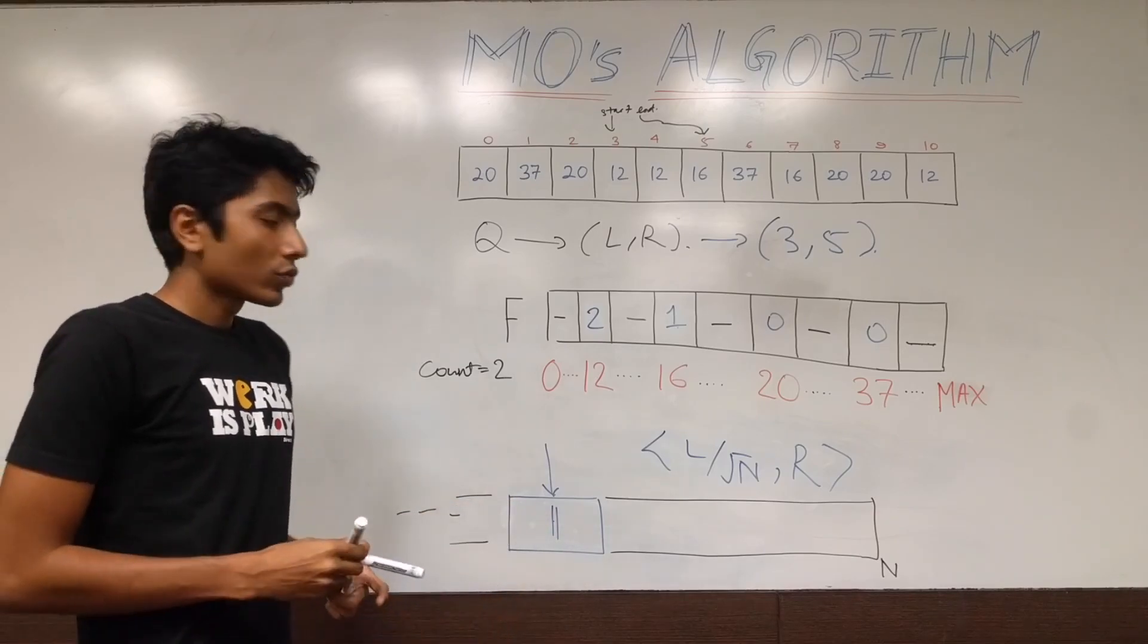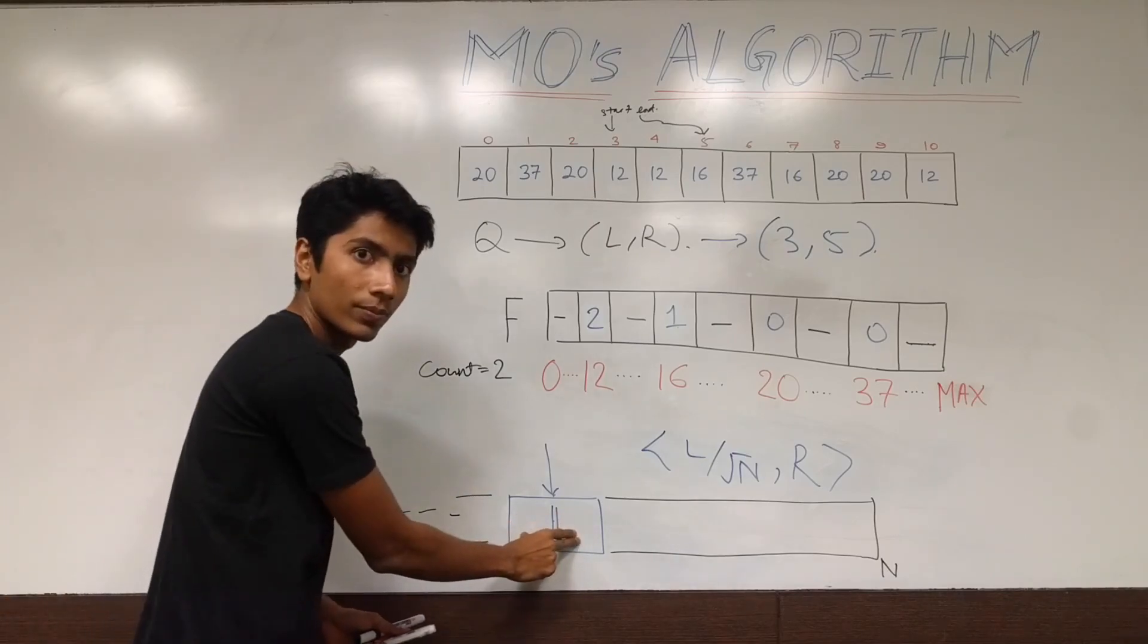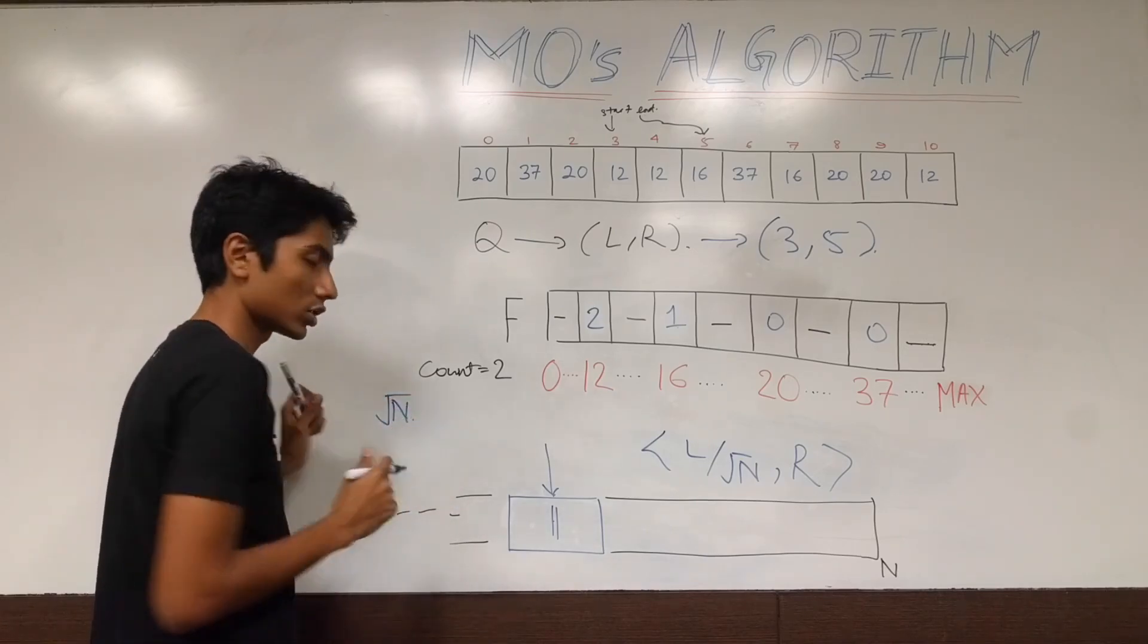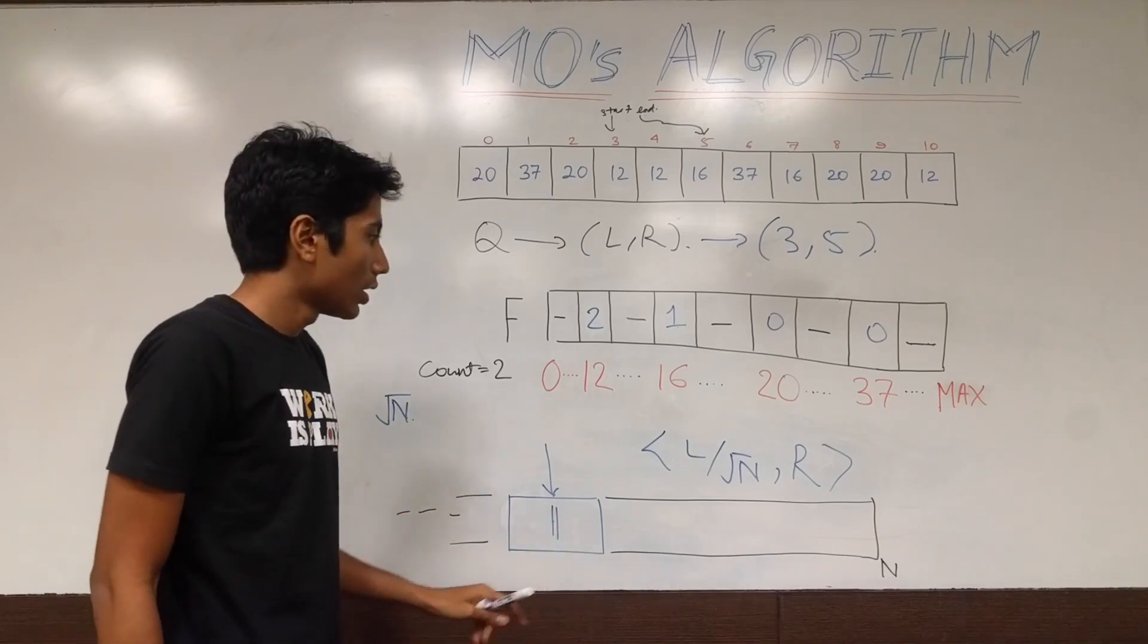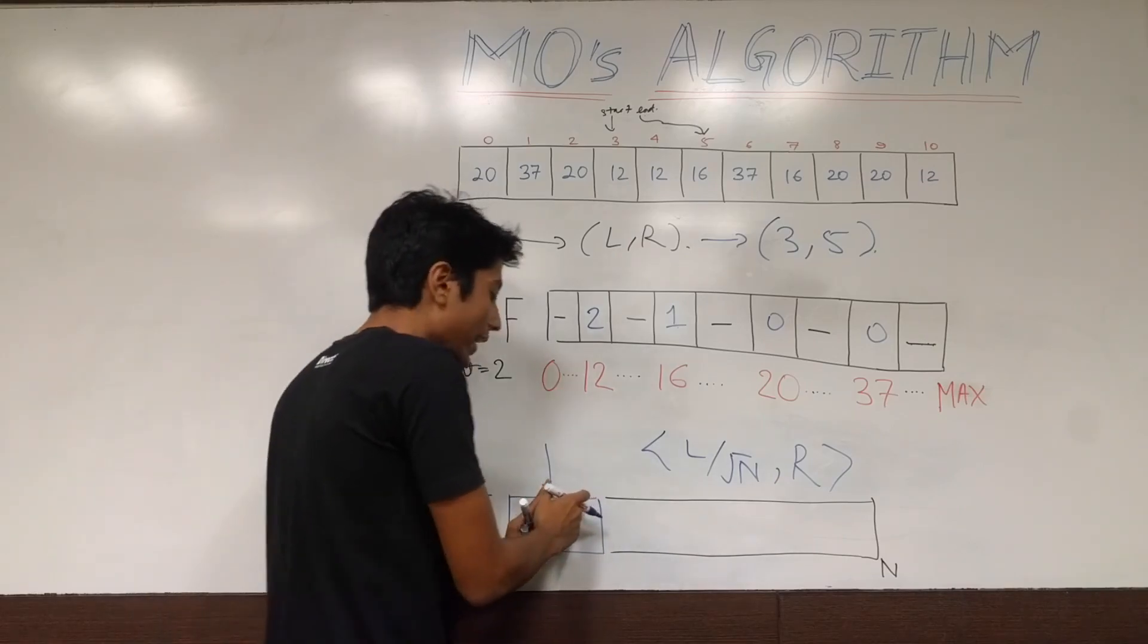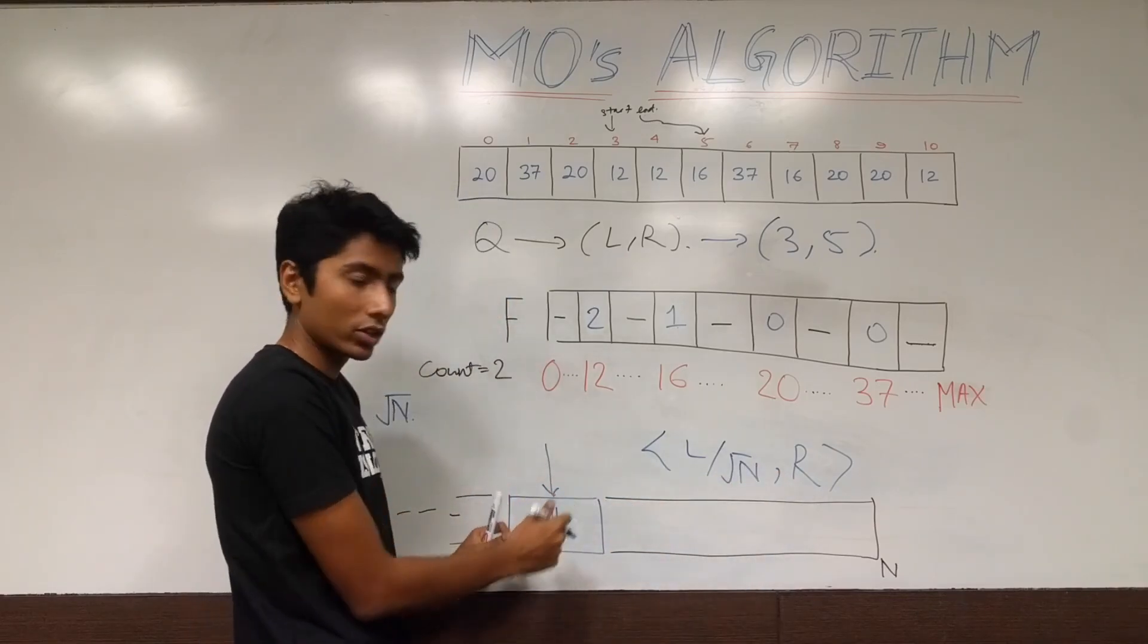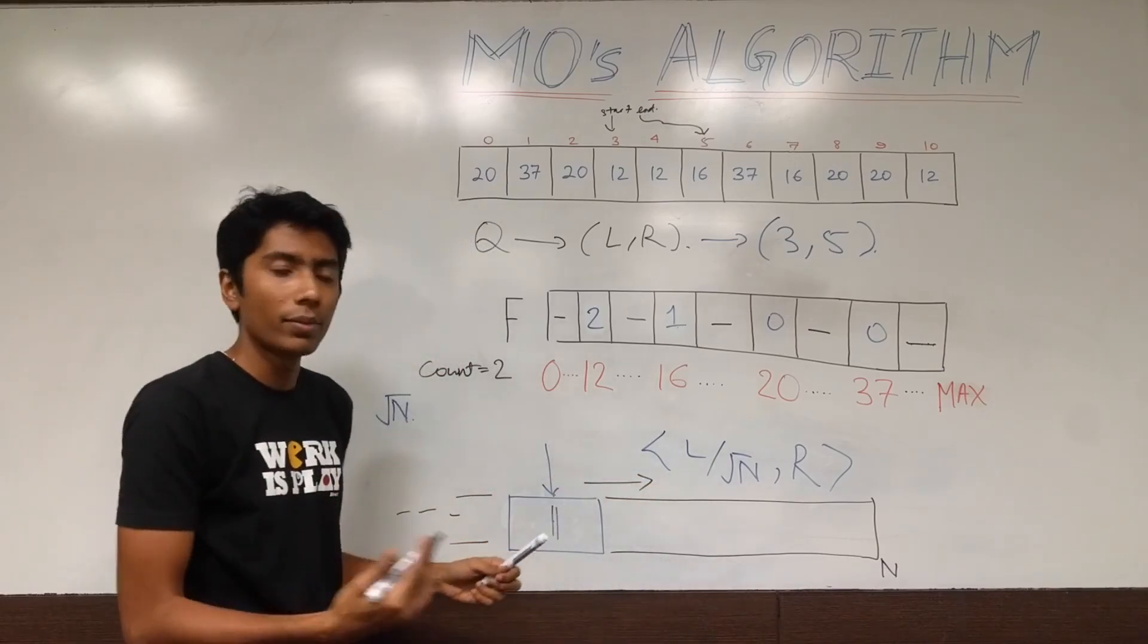For each query, your left index moves by at most root n for this block. For this specific block, it moves by root n. So, each query is making it move by root n at most. For all the queries in this block, right is only, we are only expanding our range to the right. Because, we have sorted by right for all the queries falling in this block. So, right will only get incremented, end will only get incremented rather.